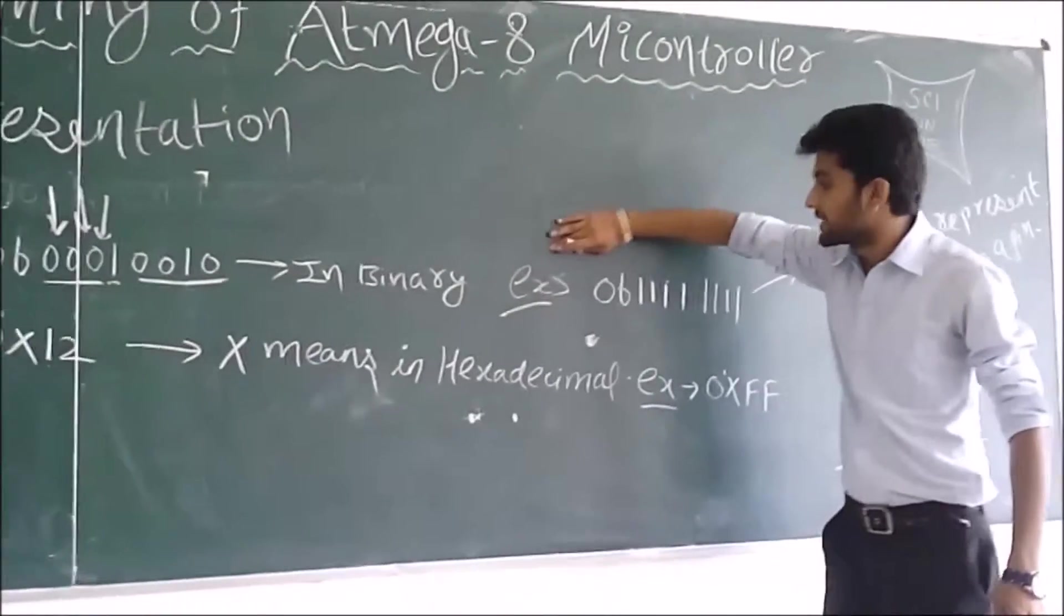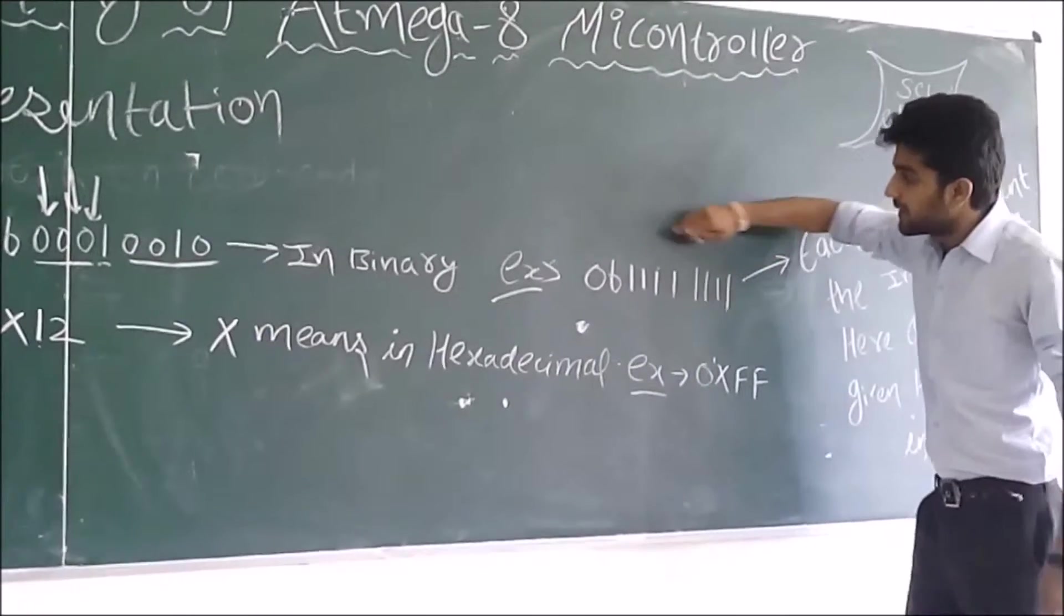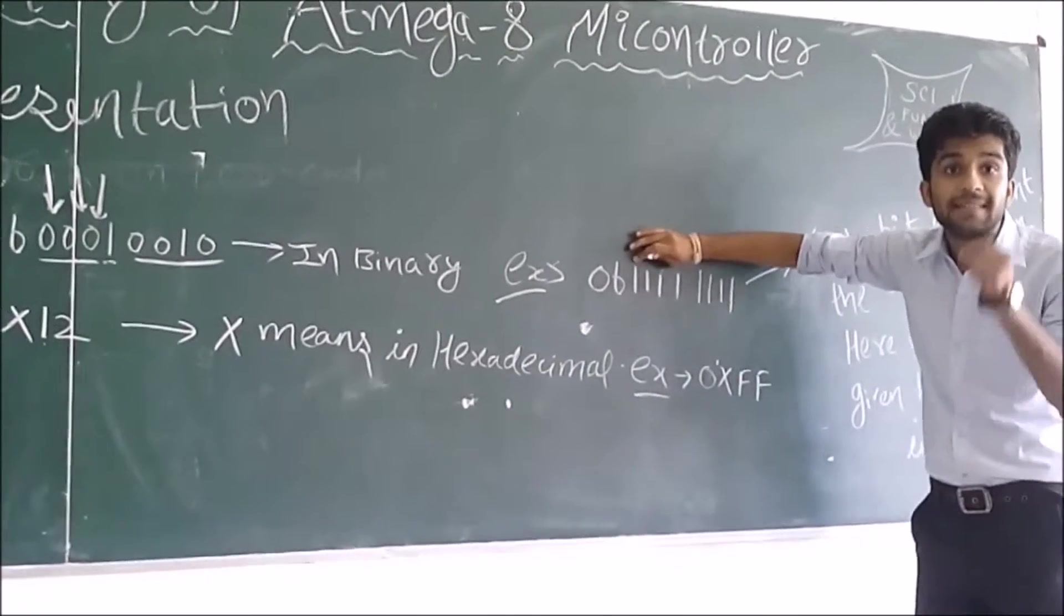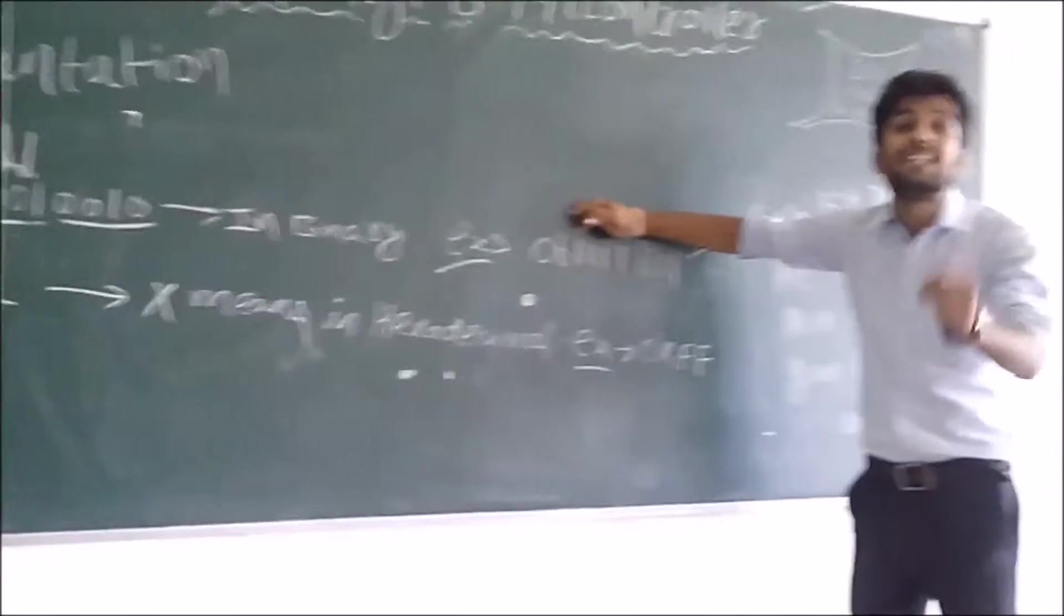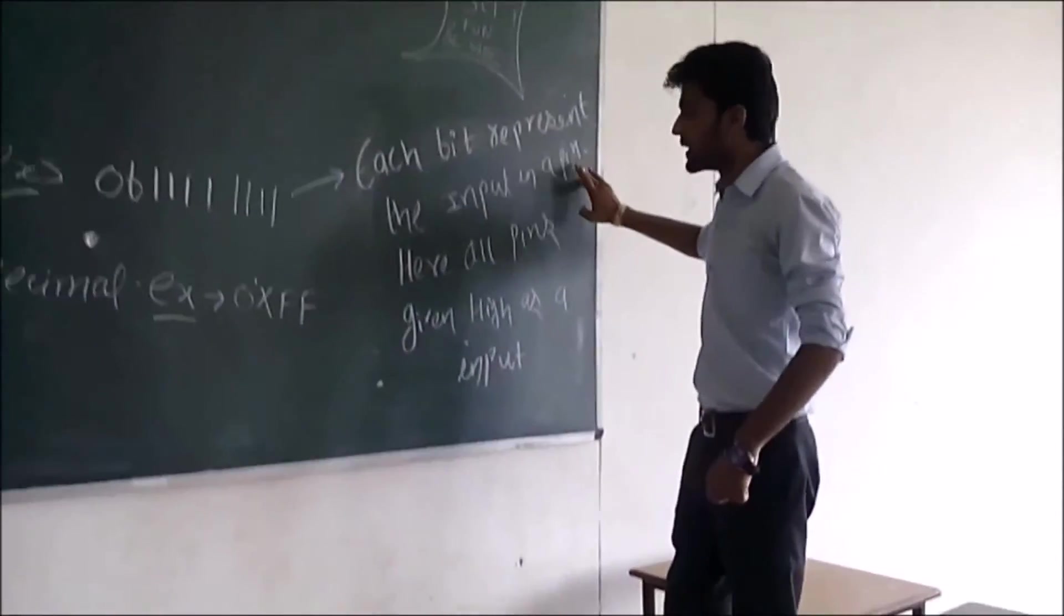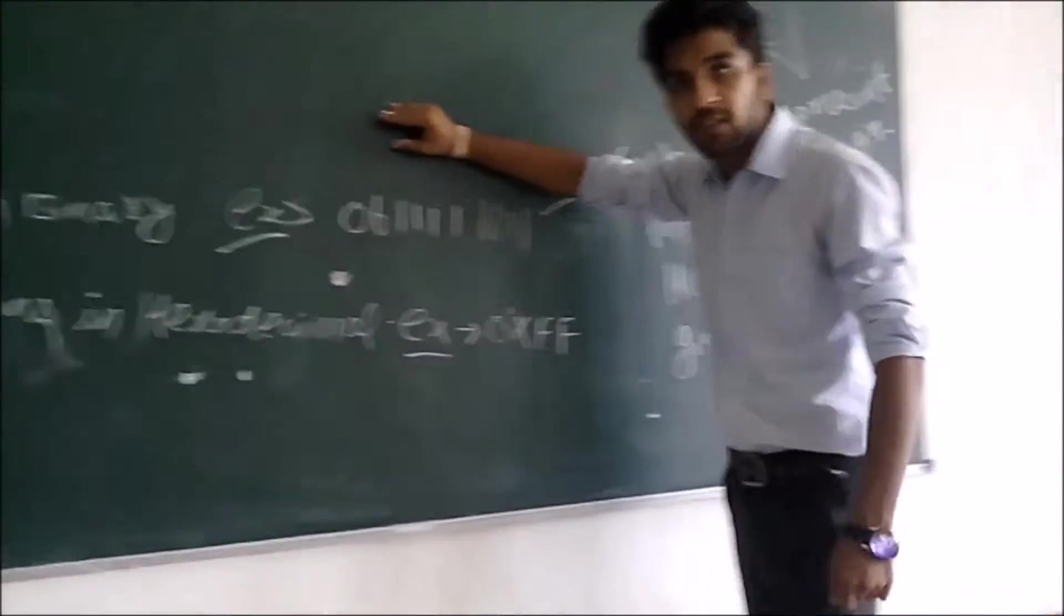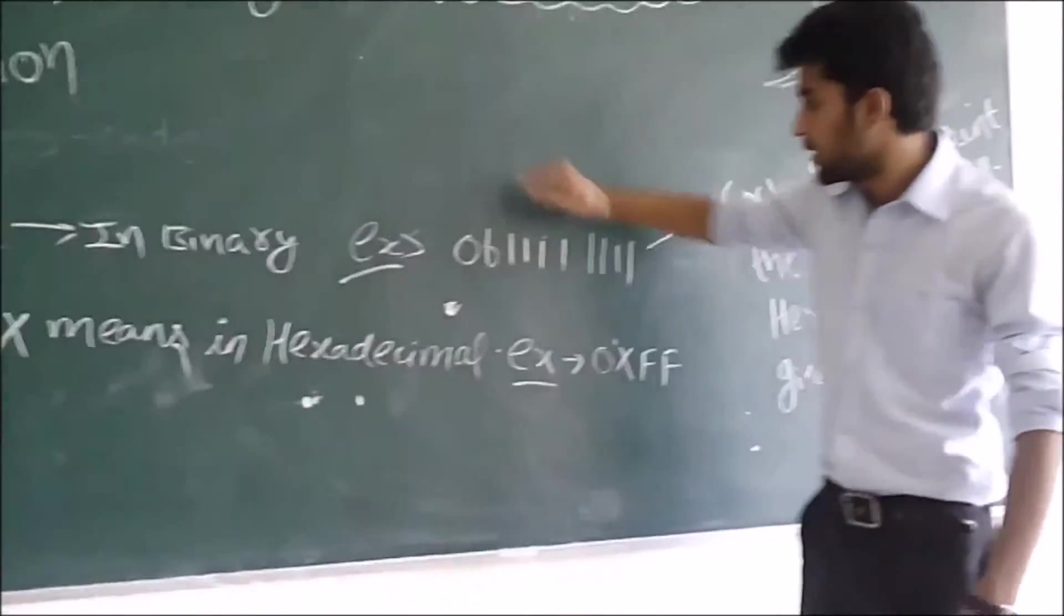Let us take an example. In binary, example 0b all ones. Each bit represents the input at each pin. Here, all pins get high input, because all are 1, so input is high.